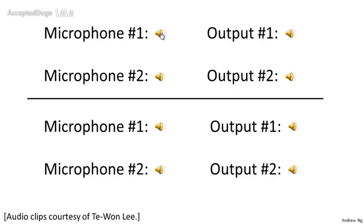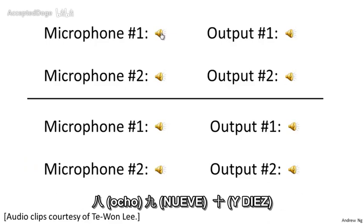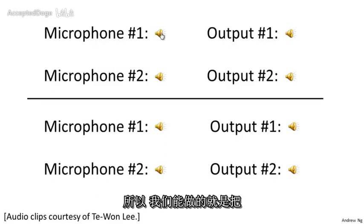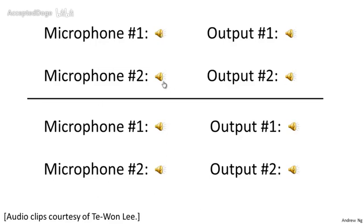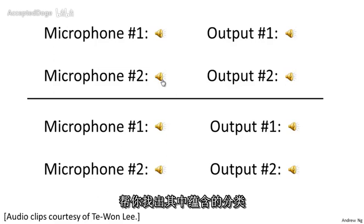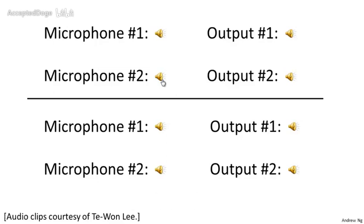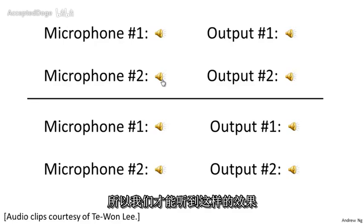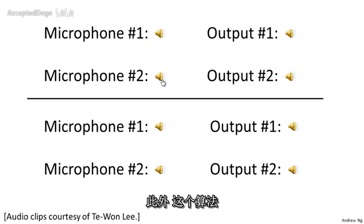The second microphone recording captures a different mix — one speaker counting in Spanish: uno, dos, tres, cuatro, cinco, seis, siete, ocho, nueve, y diez. You can take these two microphone recordings and give them to an unsupervised learning algorithm called the cocktail party algorithm, and tell it to find structure in the data. The algorithm listens and determines that two audio sources are being summed together to produce these recordings, then separates out those two audio sources.